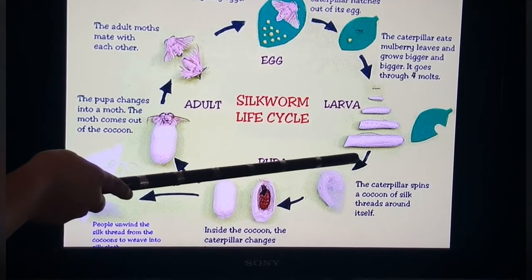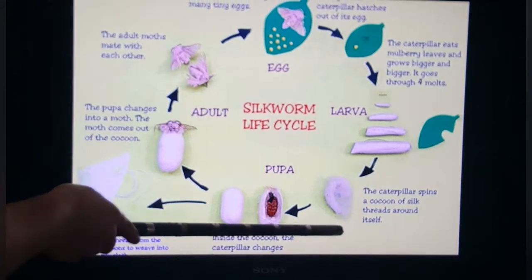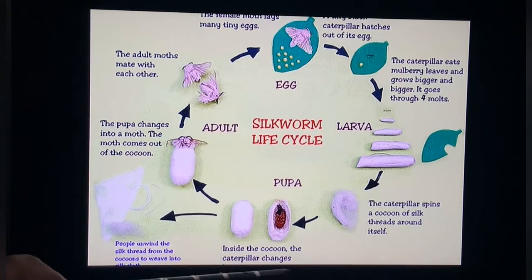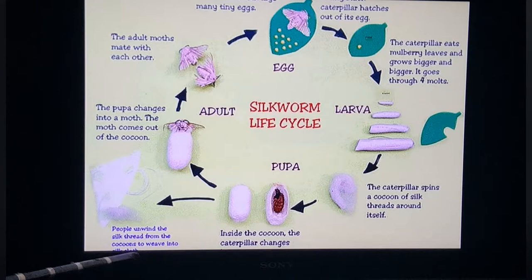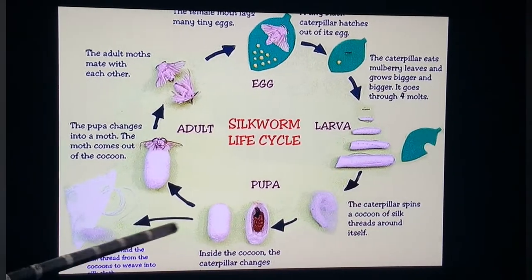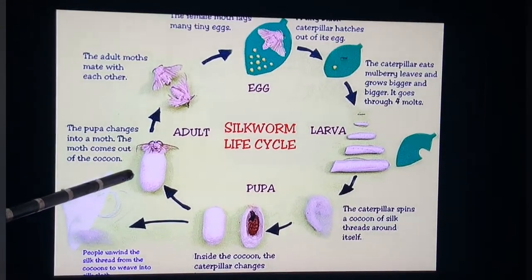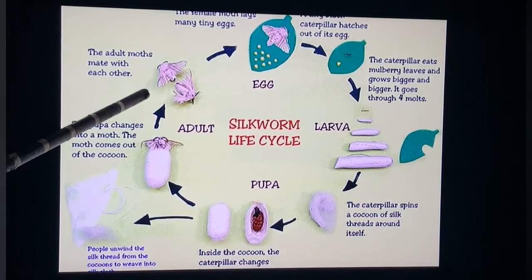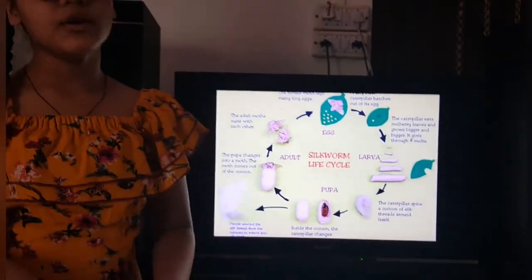It grows bigger in size. The caterpillar spins a cocoon of silk threads around itself. Then comes the pupa stage — inside the cocoon, the caterpillar changes into a pupa. People extract the silk thread from the cocoon to weave into silk cloth. How merciless! Now comes the adult stage — the pupa changes into a moth, comes out of the cocoon, and the adult moths mate with each other. Again, eggs are formed and the life cycle goes on and on.